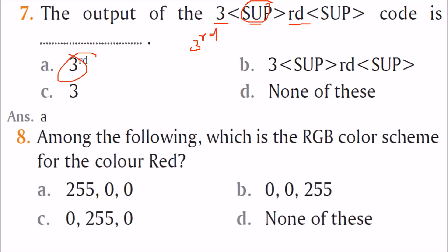Among the following, which is the RGB color scheme for red? We need to find where R is 255. The first option has R as 255, making it red. The others would be blue or green since all other values are zero. The answer is A.